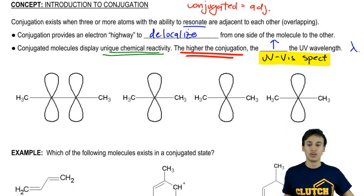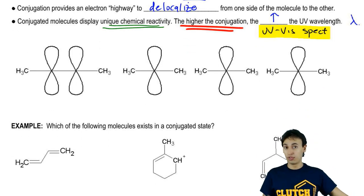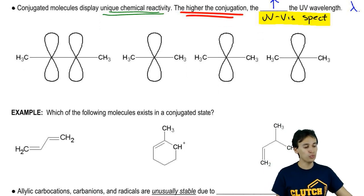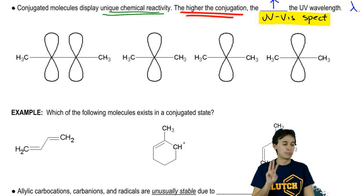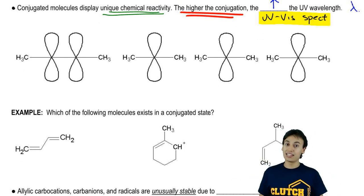Now, let's actually talk about the properties of the types of molecules that are conjugated. We just said that three atoms with the ability to resonate have to be back-to-back. What type of atoms are the ones that can resonate?